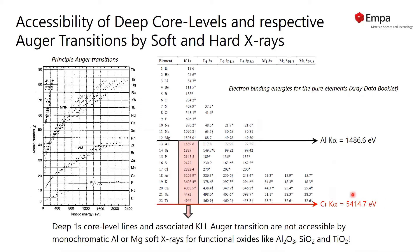However, if we have the chromium alpha source, we are able to measure the deep KLL transitions for important elements like aluminum, silicon, and titanium. This was not possible with commercial systems equipped with a monochromatic soft X-ray source up to date.